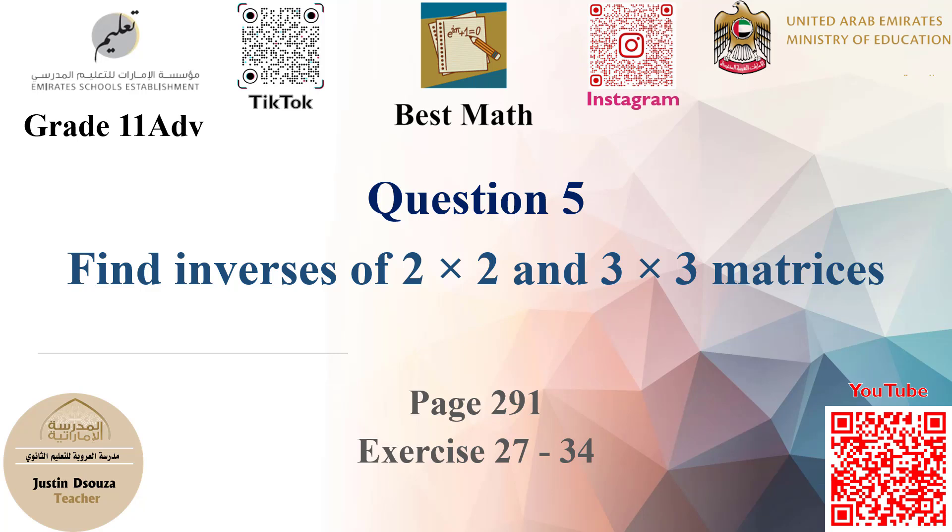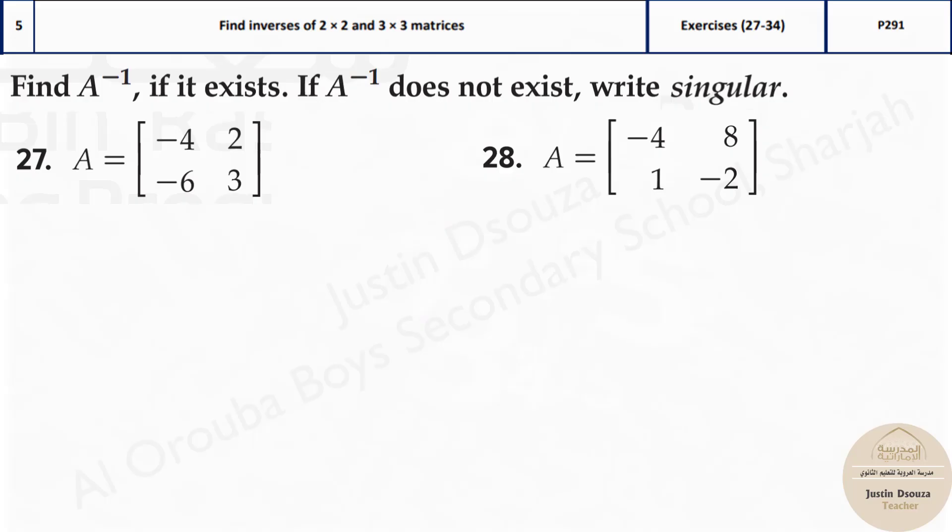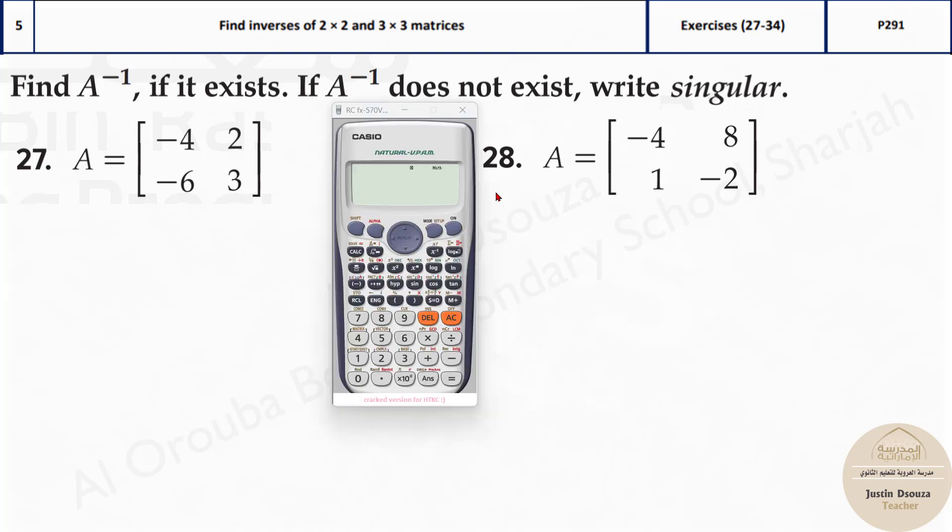Question number 5 is about inverses of 2 x 2 or 3 x 3 matrices. This is a straightforward and easy problem in calculator. So let's take our calculators now. Here you need to follow the methods very closely. You should not do anything wrong because you cannot get the answers.